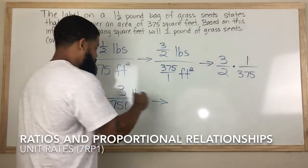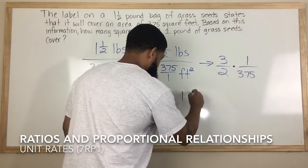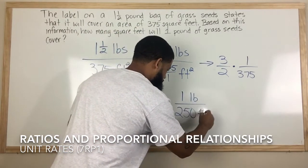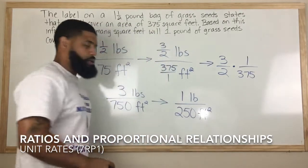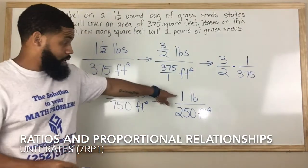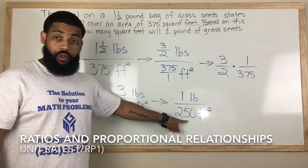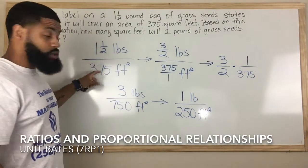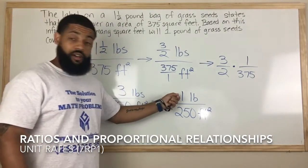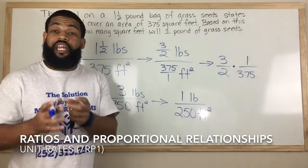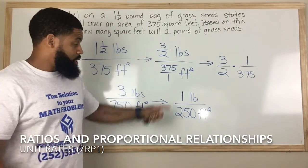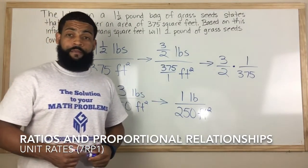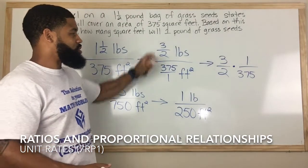3 and 750 are both divisible by 3. So 3 divided by 3 gives us 1 pound, and 750 divided by 3 gives us 250 square feet. This is our solution — 1 pound covers 250 square feet. It's still written as a ratio, and we call this a unit ratio because it tells us for 1 pound we can cover 250 square feet.